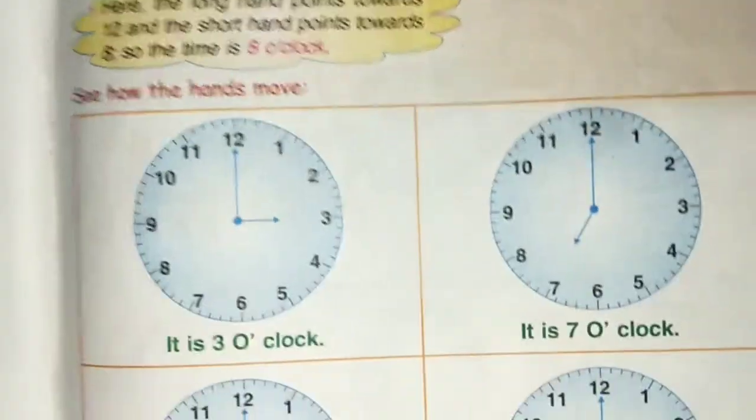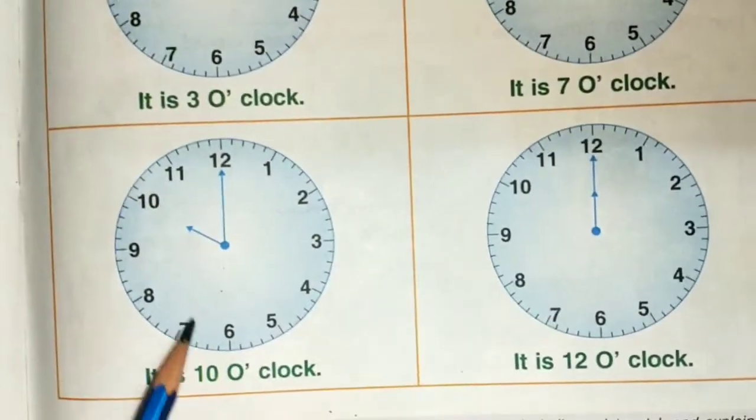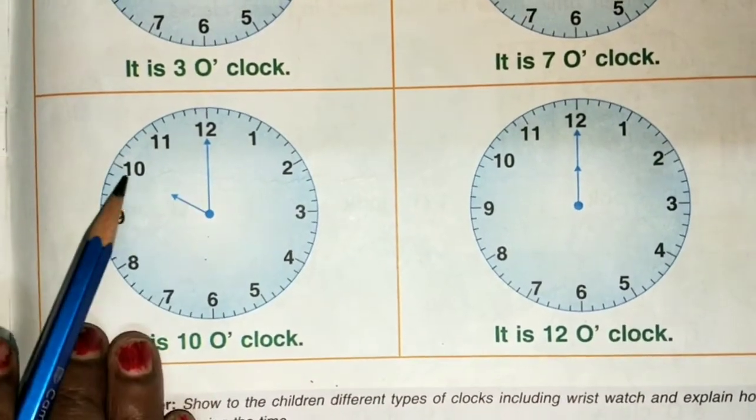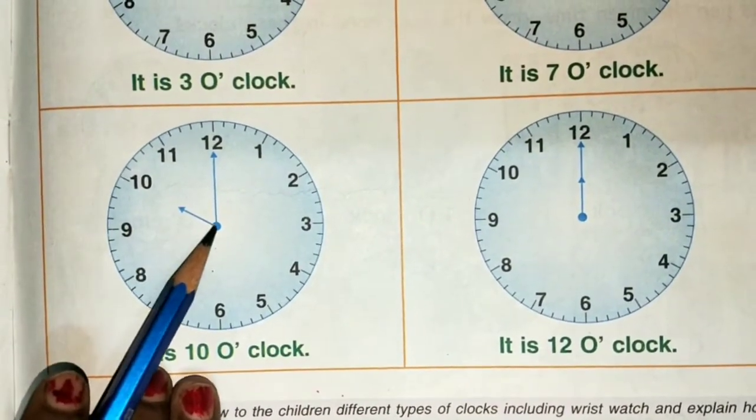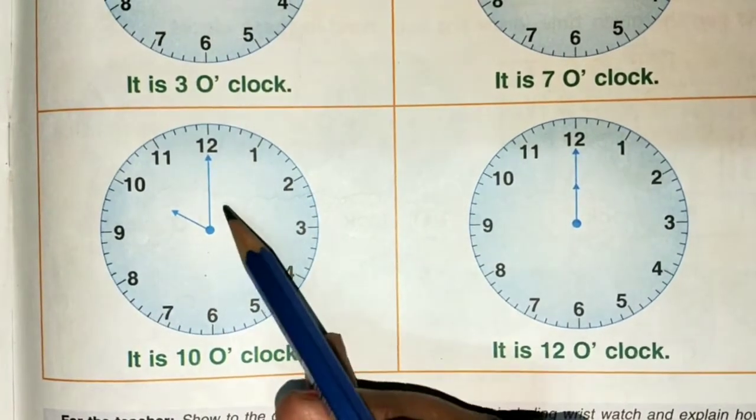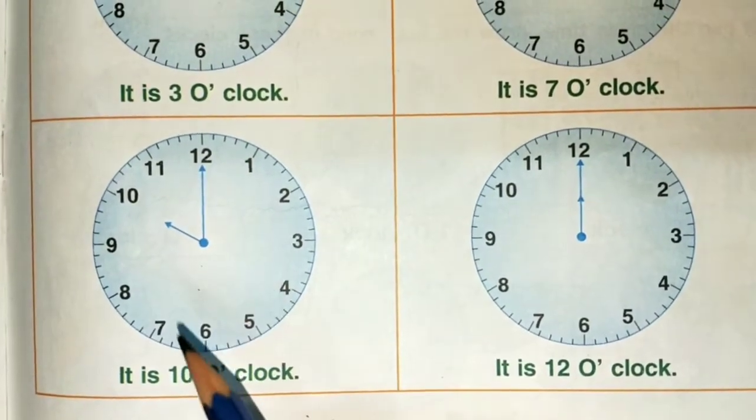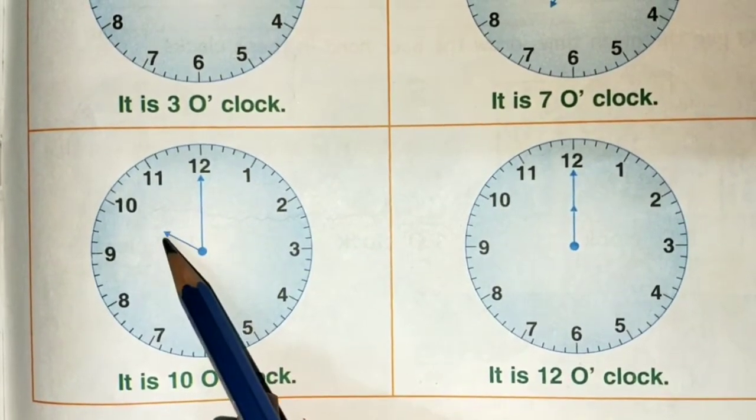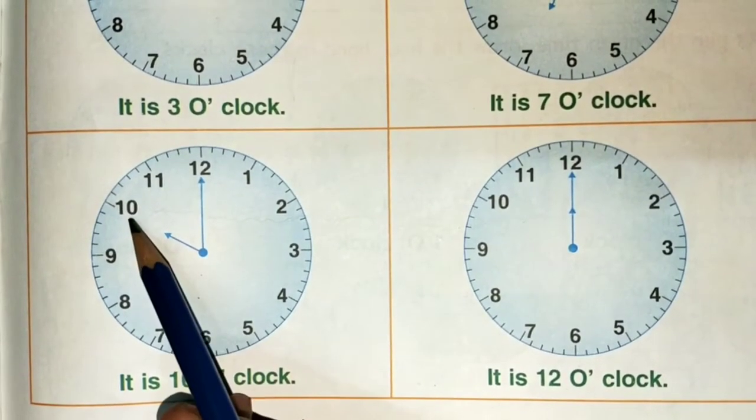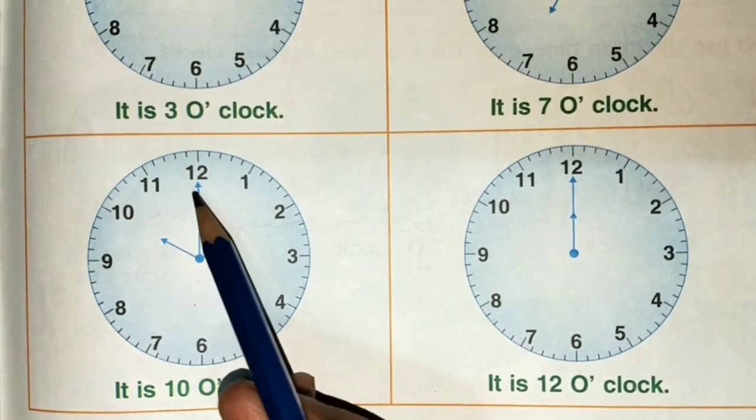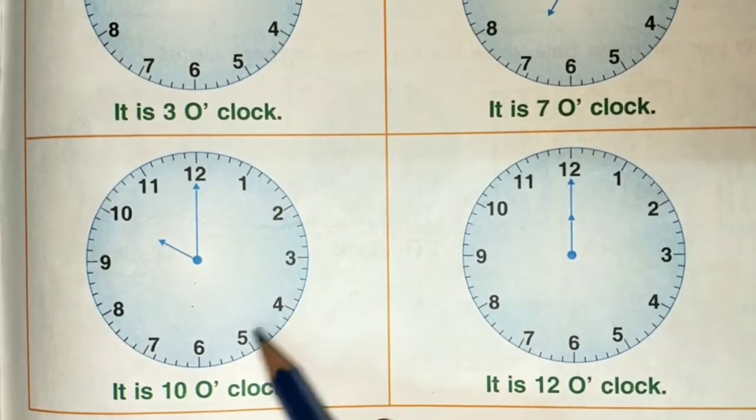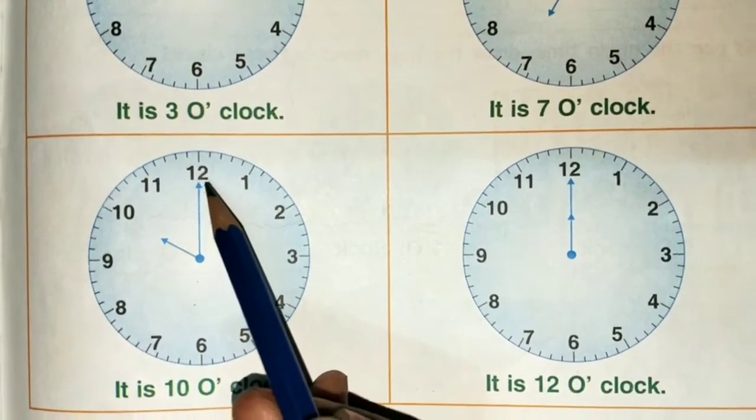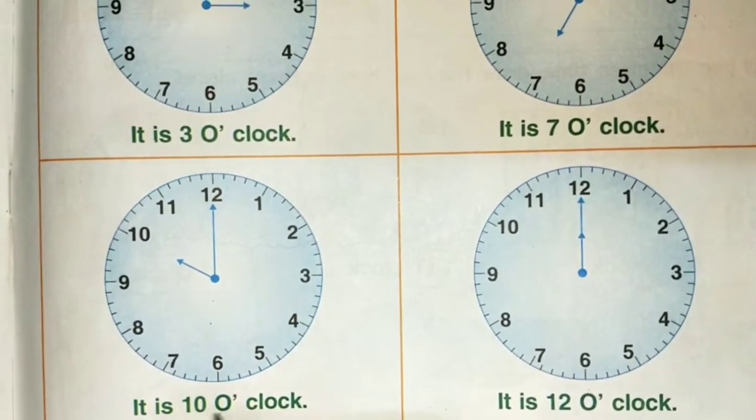Here is the third clock. The hour hand is at 10 and the minute hand is at 12. It is 10 o'clock.